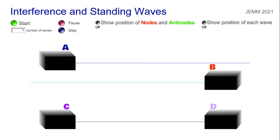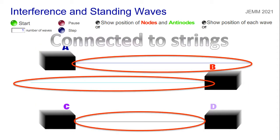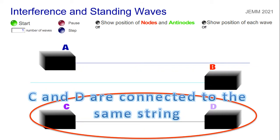We're going to investigate these topics with this simulation. So let's commence operations. What we have in the simulation are four wave generators. These generators are connected to strings or slinkies. Notice that wave generator C and wave generator D are connected to the same string. That's very important to note.